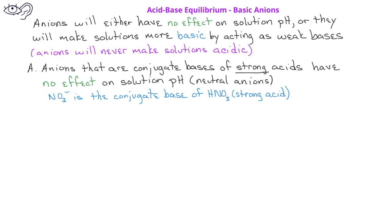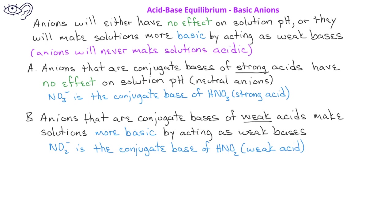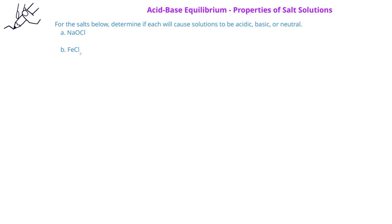Another kind of anion are those that are conjugate bases of weak acids. These types of anions make solutions basic by acting as weak bases. For example, the nitrite ion, NO₂⁻, is the conjugate base of nitrous acid, HNO₂. You should recall that nitrous acid is a weak acid. Since the nitrite ion is a conjugate base of a weak acid, the nitrite will be a basic anion and will cause solutions to be more basic. In this problem, we're asked to look at two different salt solutions and to determine if the solutions will be acidic, basic, or neutral.